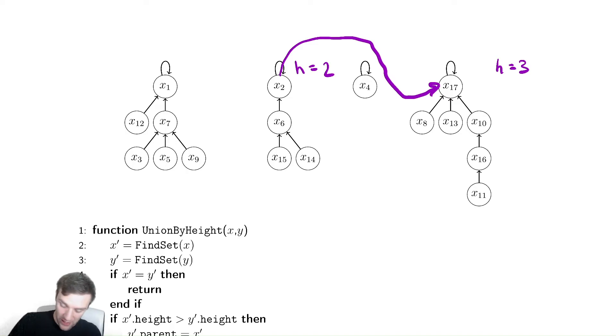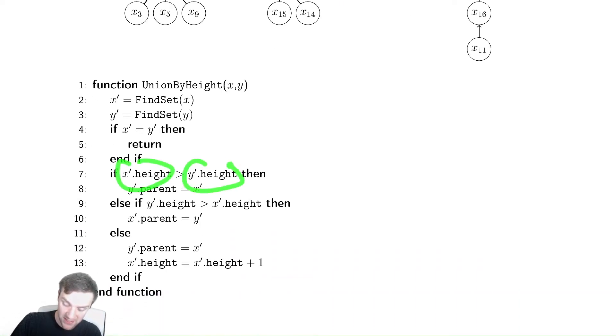So, if X' height is bigger than Y' height, then make Y' point to X'. Conversely, if Y' is the bigger of the two, do the opposite.